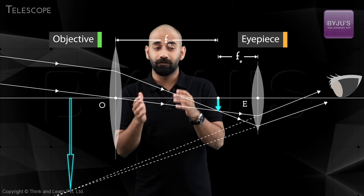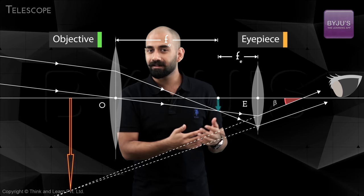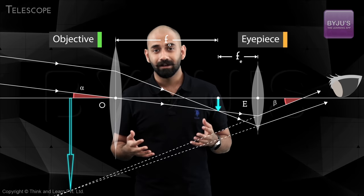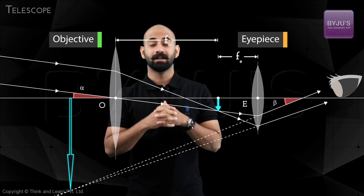You can see that the angle subtended by this final image at the eye is greater than the angle that the original object subtended at the eye. Therefore, when you see through a telescope, it looks like the object is much closer. And that's how telescopes work.